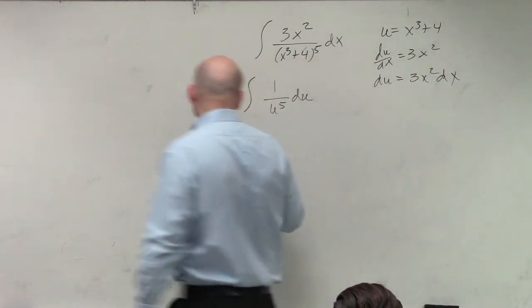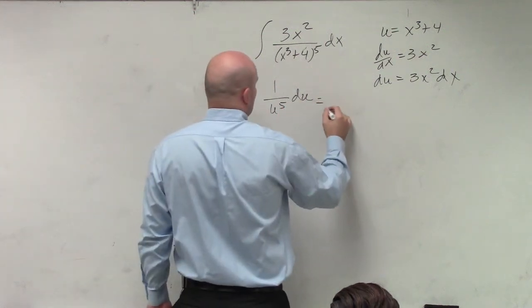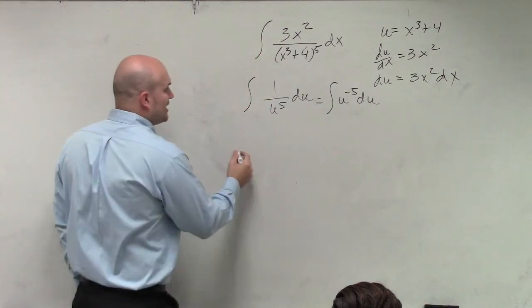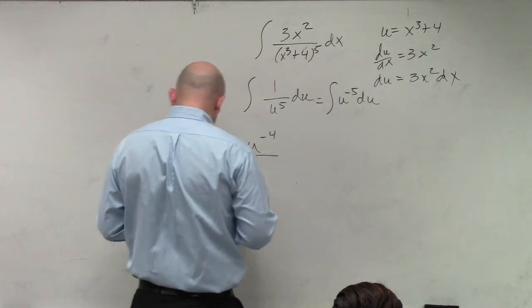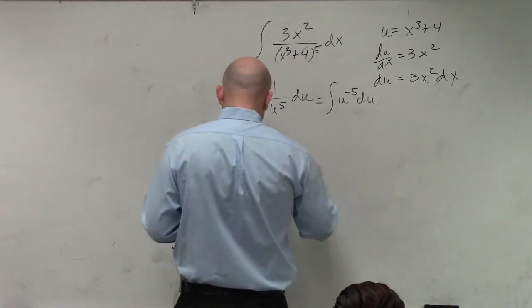So when I integrate this, I can rewrite this as u to the negative fifth du. So therefore, now when I integrate this, I get u to the negative fourth divided by negative 4 plus c,